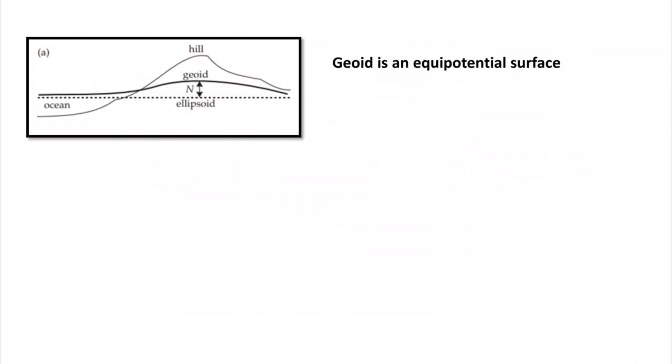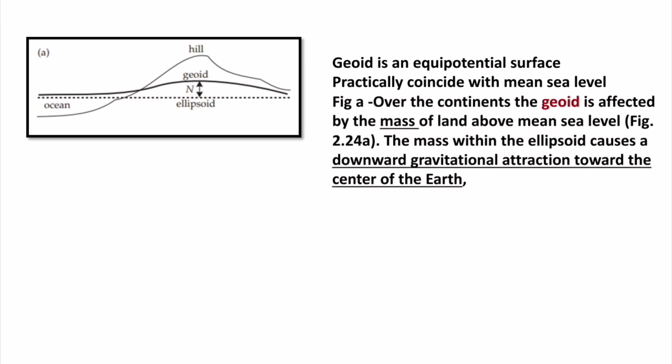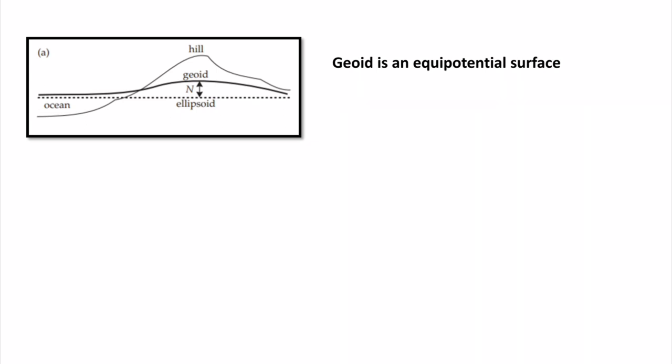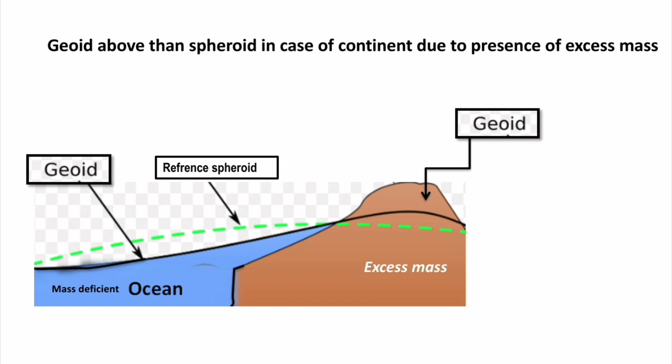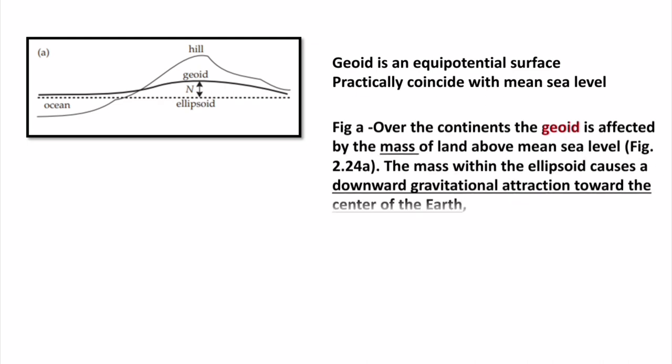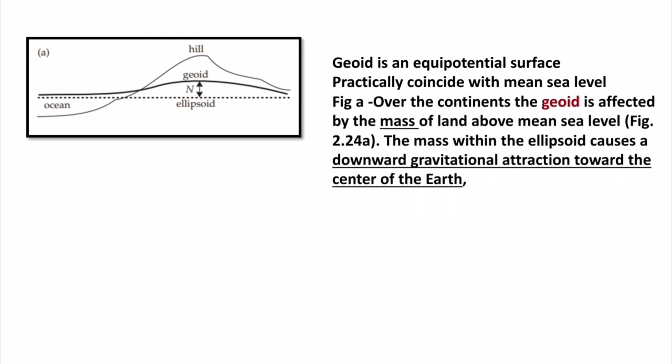What is geoid? The geoid is an equipotential surface, and practically we can see that it coincides with mean sea level. Over the continent the geoid is affected by mass — geoid is always affected by mass. As you have seen in the previous slide, in the case of a hill there is excess mass so the geoid will be elevated, it is higher as compared to the spheroid. In the case of ocean there is mass deficiency so the geoid will be lowered as compared to in the case of a hill.